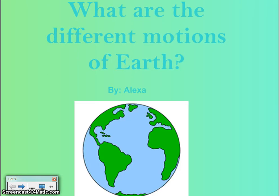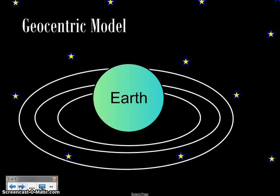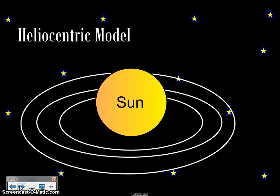What are the different motions of Earth? This is an example of a geocentric model. It is the belief that Earth was in the center of the solar system. Now we know that it isn't true.